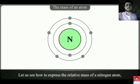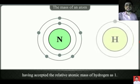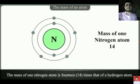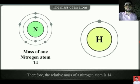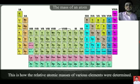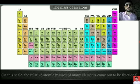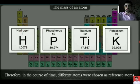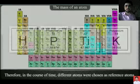The mass of a nitrogen atom is 14, calculated by adding the number of protons and neutrons present in its nucleus. This is how the relative atomic masses of various elements were determined. However, on the hydrogen scale, the relative atomic masses of many elements came out to be fractional — for example, hydrogen itself is 1.007.